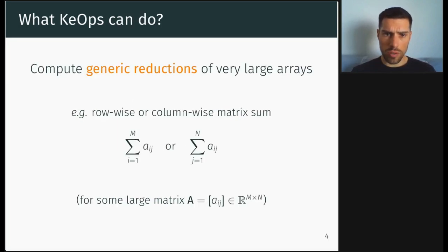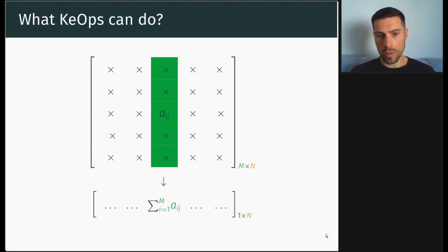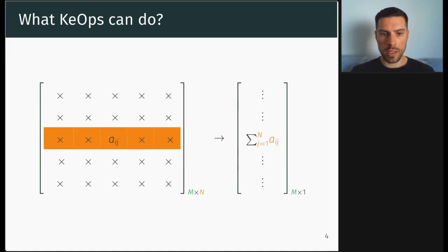What KeOps can do: basically it can compute generic reduction of very large arrays. For instance, if you have a very large matrix A indexed by i and j, a reduction is a row-wise or column-wise sum of the matrix elements. Here you have the row-wise sum over the index i and here you have the column-wise sum over the index j.